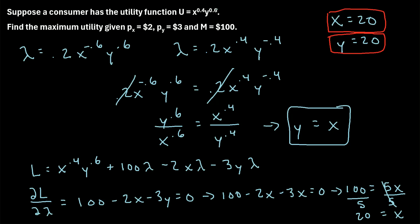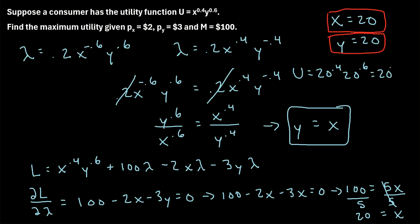To find the maximum utility value, we plug x = 20 and y = 20 into the utility function: u = 20^0.4 times 20^0.6. Adding the exponents 0.4 and 0.6 gives 1, so this equals 20^1 = 20. When we consume 20 units of each good, our maximum utility given the budget constraint is 20.